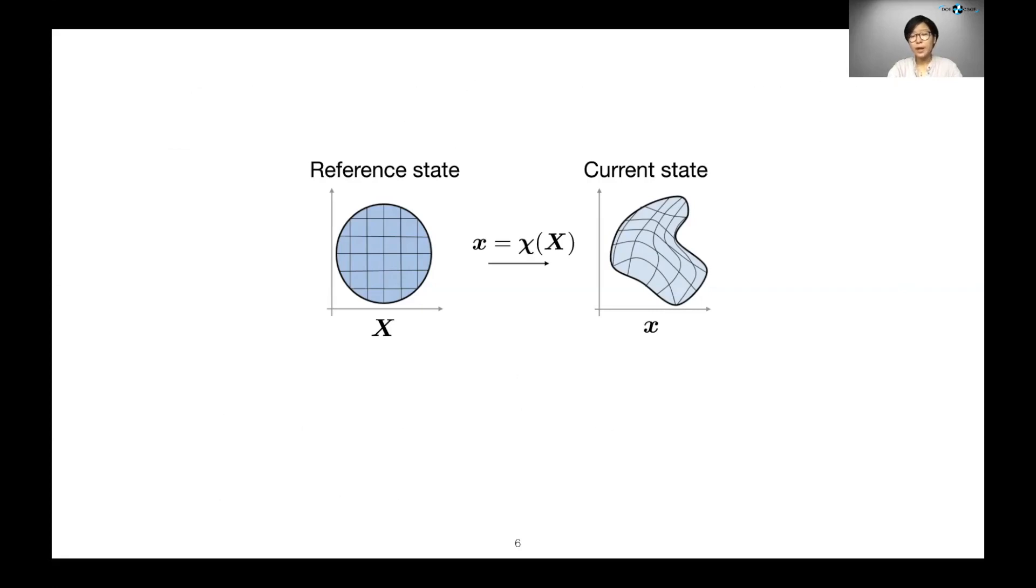However, it's not typical that we have access to the reference state in an Eulerian method. So instead of χ, we define the inverse of χ, the reference map field, and we call it ξ.